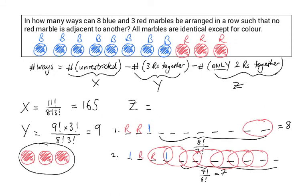We have 2 cases or 2 replicas of case 1, and 1, 2, 3, 4, 5, 6, 7, 8 replicas of case 2. And so z equals 2 times 8 plus 8 times 7 equals 72.